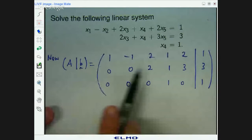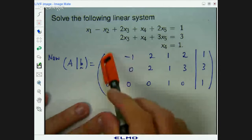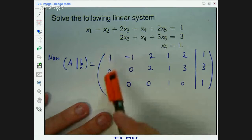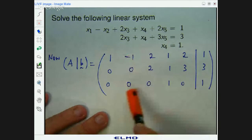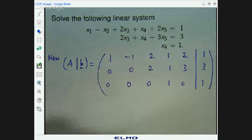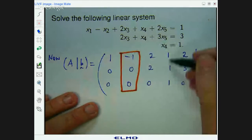So we write the coefficients as entries in our matrix, and then the right hand side is written as a column over here. And there you have it. Now if we look at this matrix it is in row echelon form.